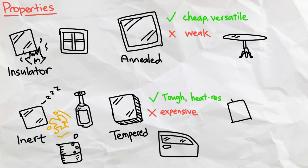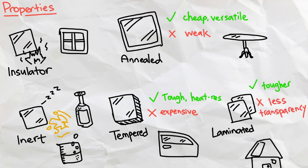And by integrating plastic vinyl layers, we have laminated glass, which is even stronger and safer than tempered glass at the cost of less transparency, making it great for windshields or skylights, which are glass roofs.